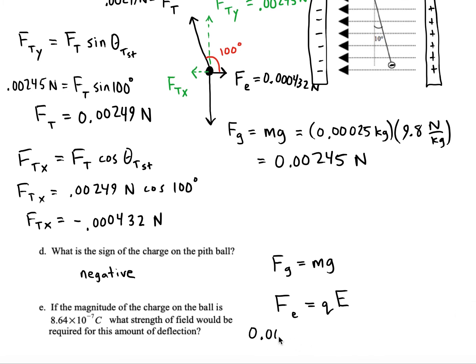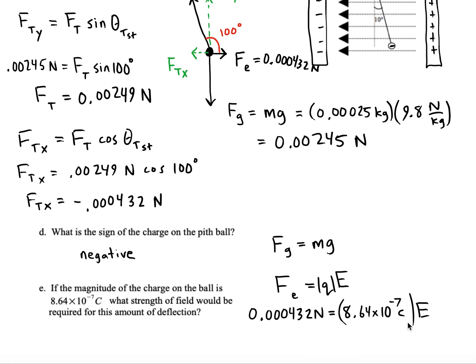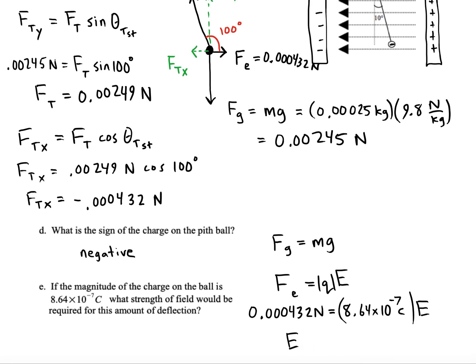When it comes to our q, if we just want the strength of it we can use the absolute value. E is 500 newtons per coulomb.